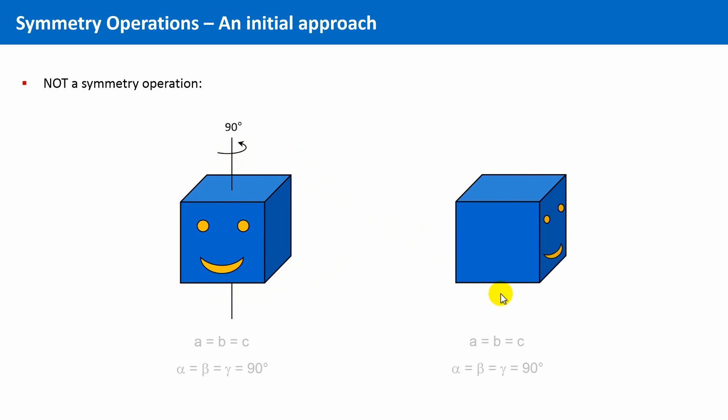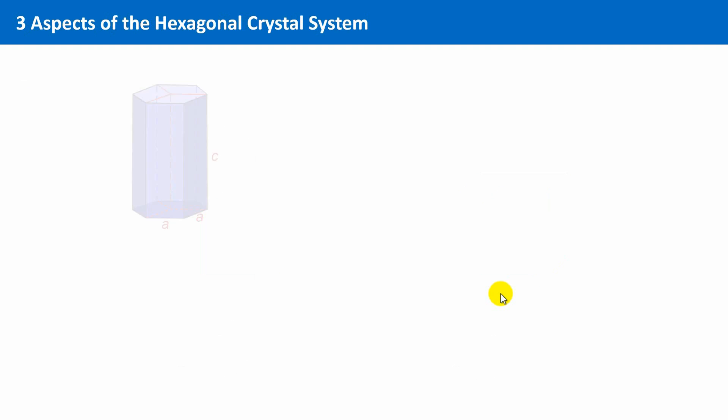Now we are ready to investigate a few details of the hexagonal crystal system. Here you see again a hexagonal prism, and one third of it is the primitive hexagonal unit cell.